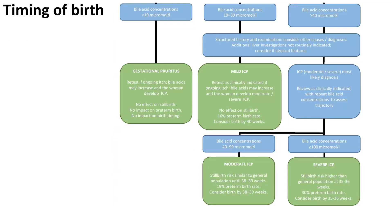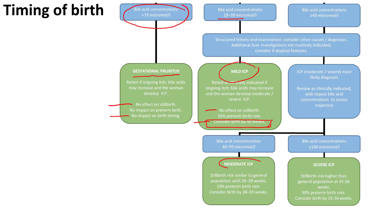Timing of birth depends mainly on bile acid concentration. Gestational pruritus (bile acids less than 19 µmol/L) has no effect on stillbirth and no impact on birth timing. Mild ICP (19–39 µmol/L) has no effect on stillbirth; consider birth by 40 weeks. Moderate ICP (40–99 µmol/L): stillbirth rate is similar to the general population until 38–39 weeks, so consider birth by 38–39 weeks. Severe ICP (100 µmol/L or more): stillbirth rate is higher than the general population at 35–36 weeks, so consider birth by 35–36 weeks.